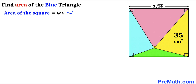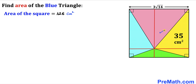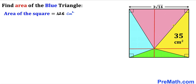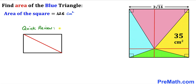Now let's make an observation. We can see a point where all the triangles inside the square meet. We draw horizontal and vertical lines passing through that point. These vertical lines are parallel to each other, and likewise the horizontal lines are parallel to each other, resulting in four rectangles: the first, second, third, and fourth.